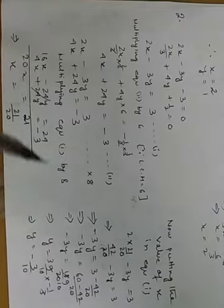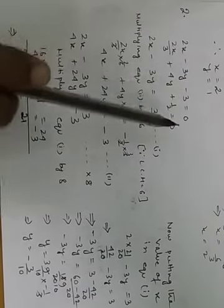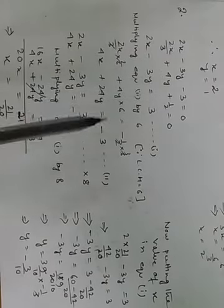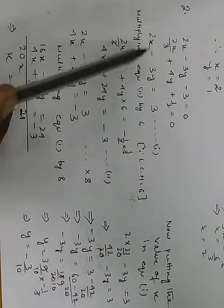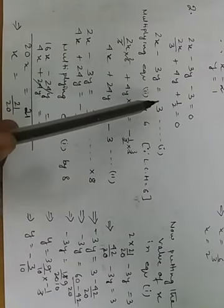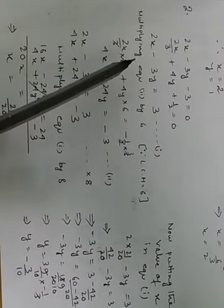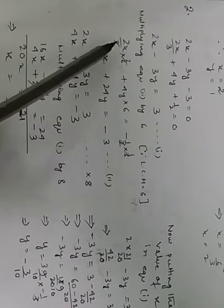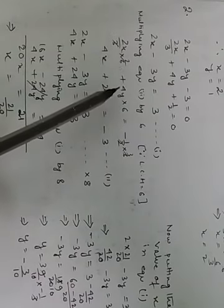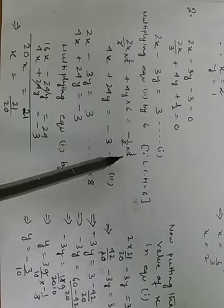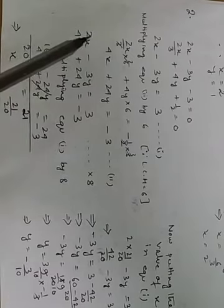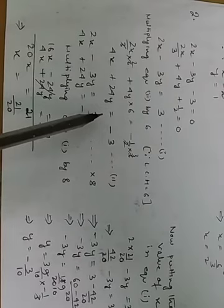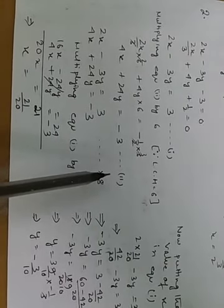Next sum: 2x minus 3y minus 3 equal to 0. 2x by 3 plus 4y plus 1 by 2 equal to 0. So first equation we are getting 2x minus 3y equal to 3, equation 1. Now we will multiply equation 2 by 6 since LCM is 6. So 2x by 3 into 6 plus 4y into 6 equal to minus 1 by 2 into 6. So ultimately we are getting 4x plus 24y equal to minus 3. This is our equation number 2.